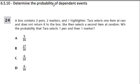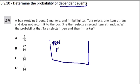We're determining the probability of dependent events—that just means events that depend on each other. Here they have a box with three pens, two markers, and I like to draw these out just to help me visualize the problem.